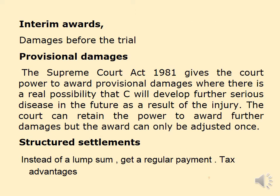Some other points to consider: interim awards are damages given before the trial — if the trial is taking a long time, damages may be awarded beforehand just to tide the claimant over. Provisional damages are provided for in the Supreme Court Act 1981, which gives the court the power to award provisional damages where there is a real possibility that the claimant will develop further serious injury or disease in the future as a result of the injury. The court can retain the power to award further damages, but the award can only be adjusted once.